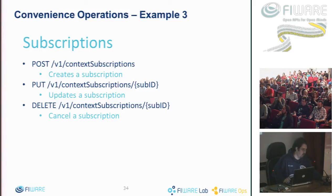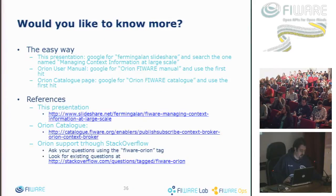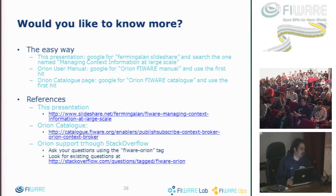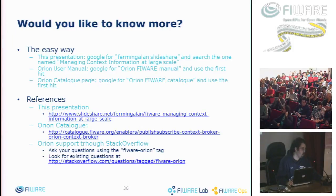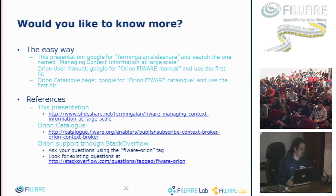I won't go into much more detail here — it's all in the documentation. I'm running out of time, so I prefer to go directly to how to get more information about Orion. Apart from this presentation, which provides an overview of the different operations, the actual manual is at the URLs shown on the slide. If you don't want to remember long URLs, I recommend a simple way: Google 'FIWARE Orion Context Broker' and you'll get the manuals. Or, to get this presentation, go to SlideShare and search for my account: fermingalan.